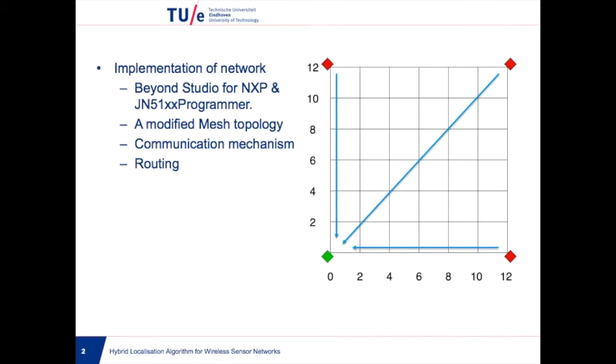The mobile node broadcasts hello messages periodically. Each anchor node in the range of the mobile node that receives a hello message can get the RSSI of the mobile node. Then, all these anchor nodes transmit a message containing the RSSI to the sync node.